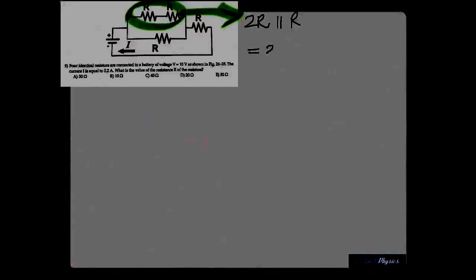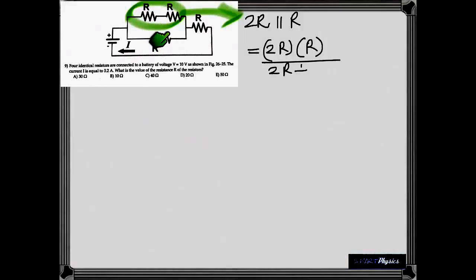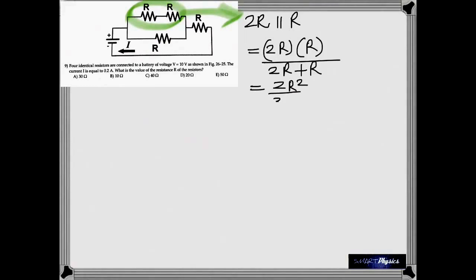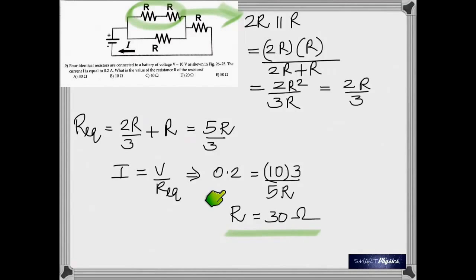Here, once again, you find that these two resistances are in series here. So it's 2R. And it's parallel to R. So take the product over the sum. And then that is in series with this. So whatever you get, 2R by 3, add it to R to get 5R by 3. And then the current would be voltage by the equivalent resistance. The current is given as 0.2. So substitute that and get R as 30 ohms.